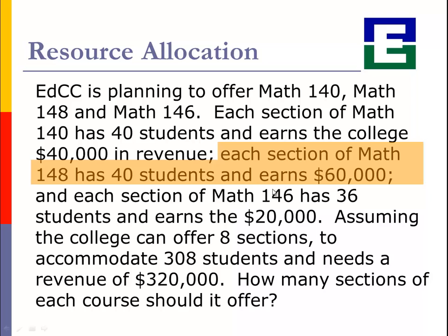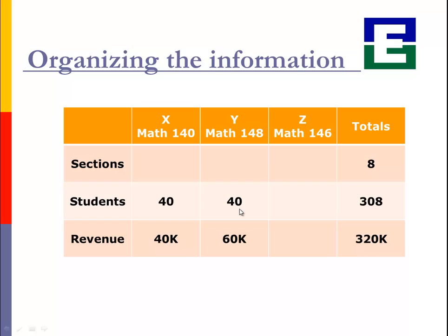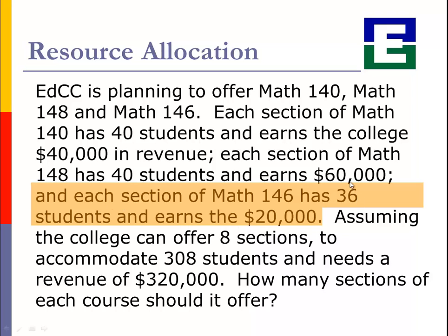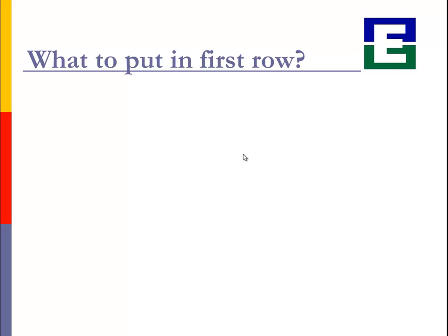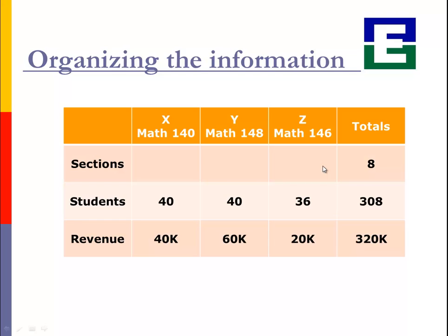Then I go back to the words, and then I see my next things. It's information about Math 148, that class. It's got 40 students in each section, and that's going to earn $60,000 each course. So then I just put that information in my student row here and my revenue row. It didn't tell me any information about the number of sections, it just told me about the number of students and the revenue for each of those classes. And then Math 146 here has 36 students, and it earns a revenue of 20,000. So I put my 36 in the student row, and I put my 20,000 in the revenue row, all in that z column, the Math 146 column.